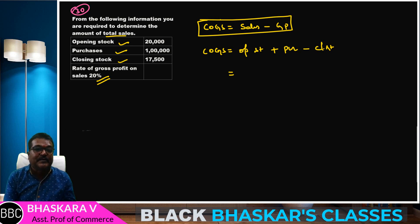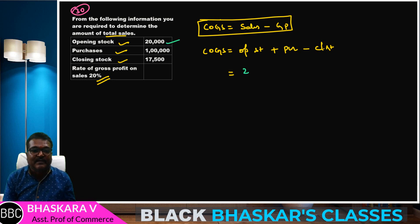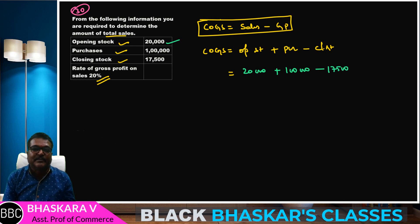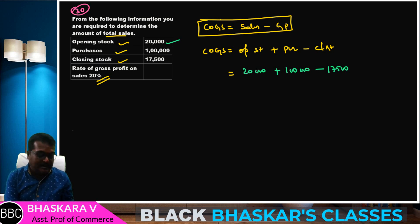Sales is not given here, so to find it we need to find cost first. Opening stock given is 20,000. Plus purchases given is 1,00,000. Add these, then minus closing stock given is 17,500. So: 20,000 plus 1,00,000 minus closing stock 17,500.